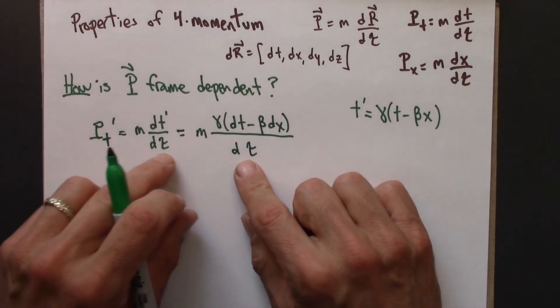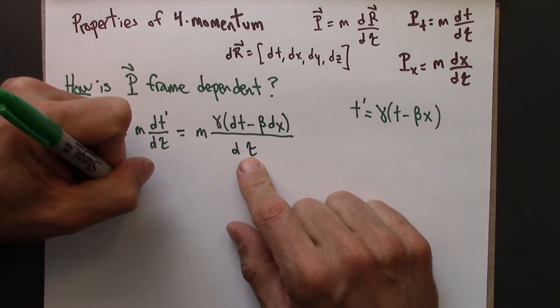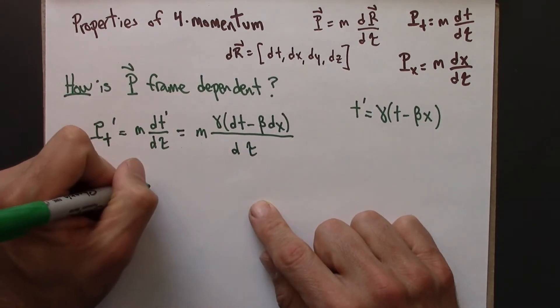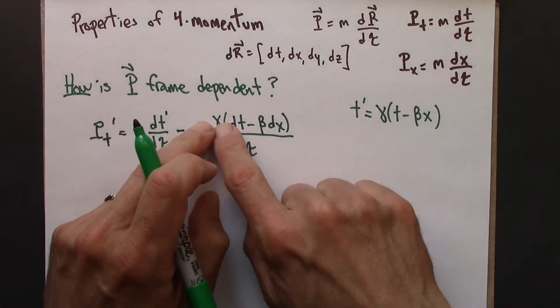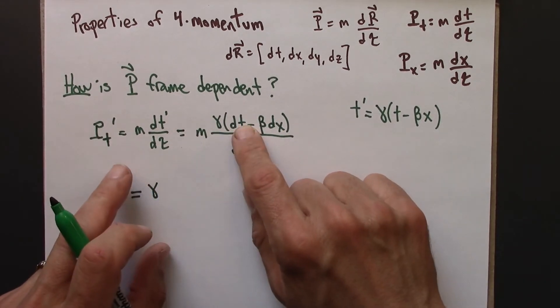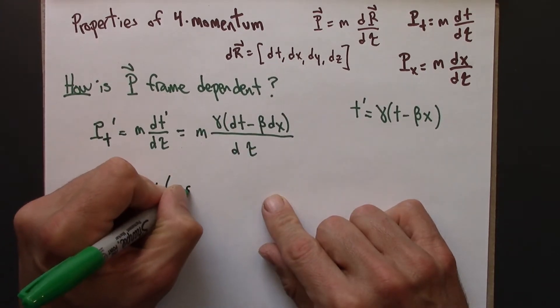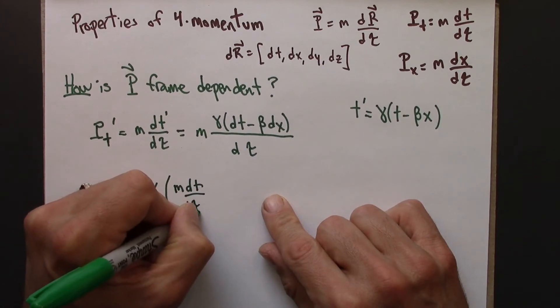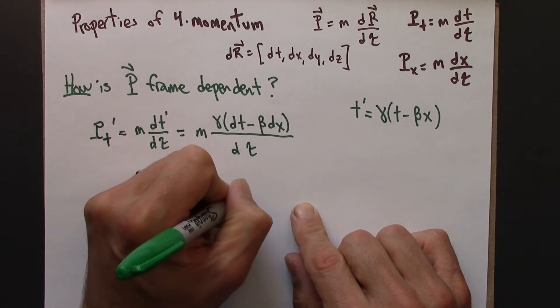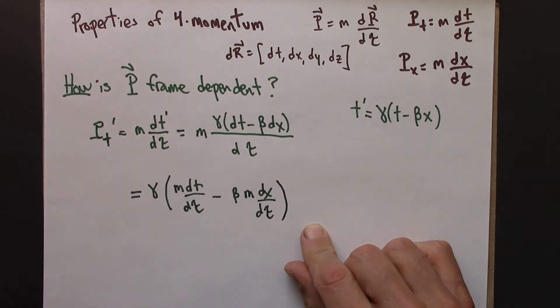So now let me do a little bit of algebra to simplify this. I'm going to pull this gamma out front of everything. And then m I'm going to distribute through, for a reason that I hope you'll see soon. So this is m dt/d tau minus beta m dx/d tau.